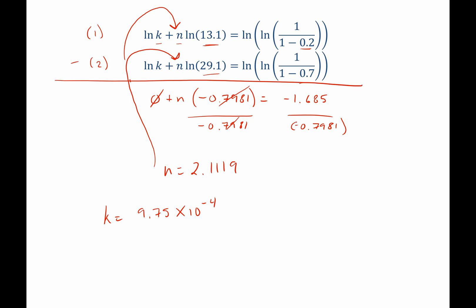Great. So now that we know n and k, we can use these in the Avrami equation to solve for the fraction transformed after any arbitrary amount of time. So let's plug them in. y, the fraction transformed, will be equal to 1 minus the exponential of negative 9.75 times 10 to the negative 4th, times our 22.8 minutes, raised to the 2.1119 exponent. Plugging these in, we find that the fraction transformed is 0.5129 or 51.29%.